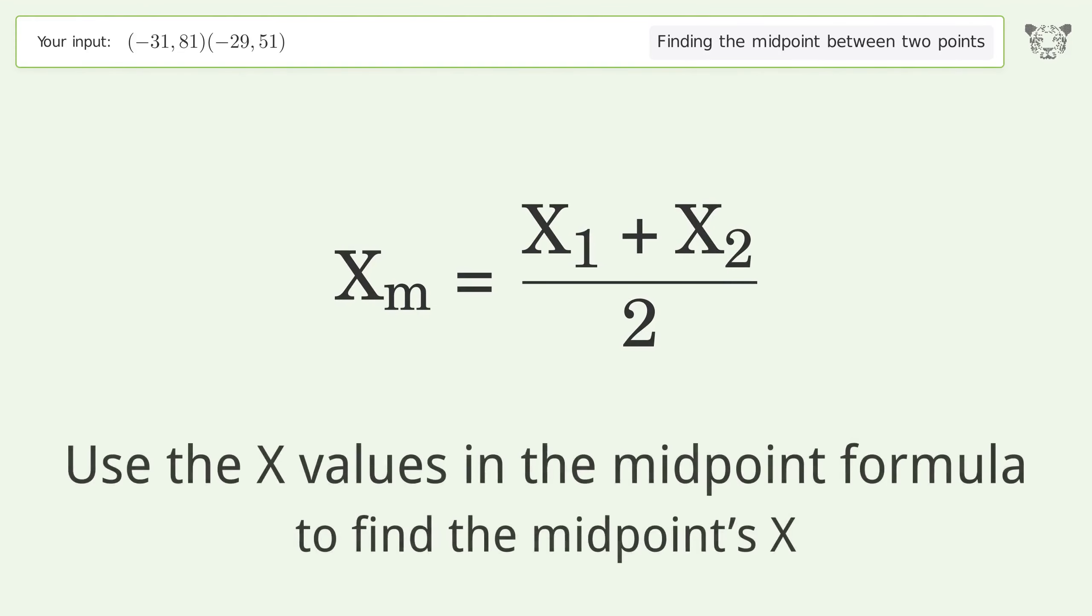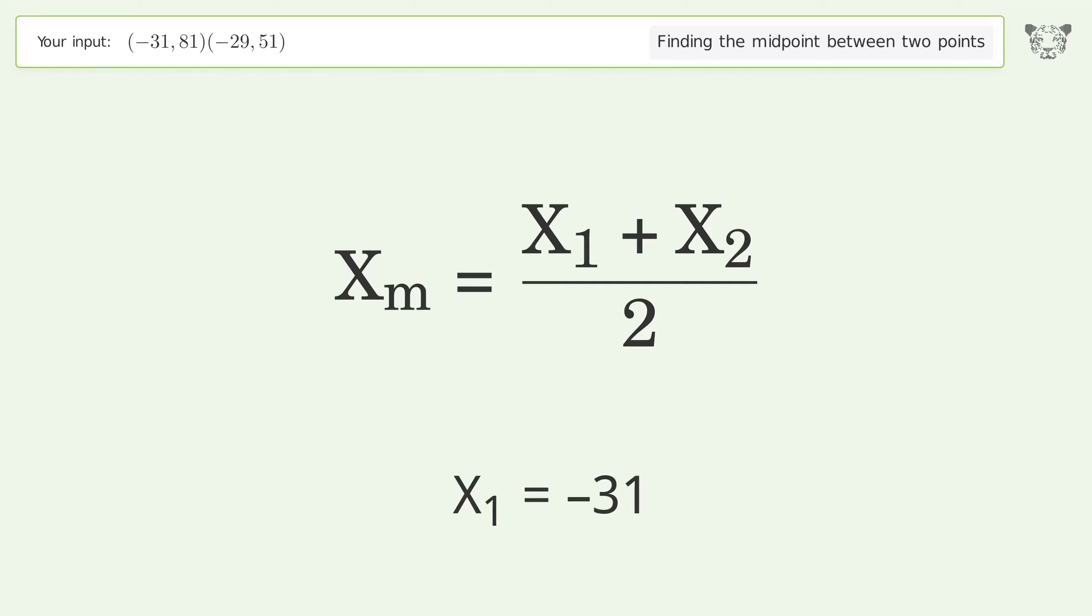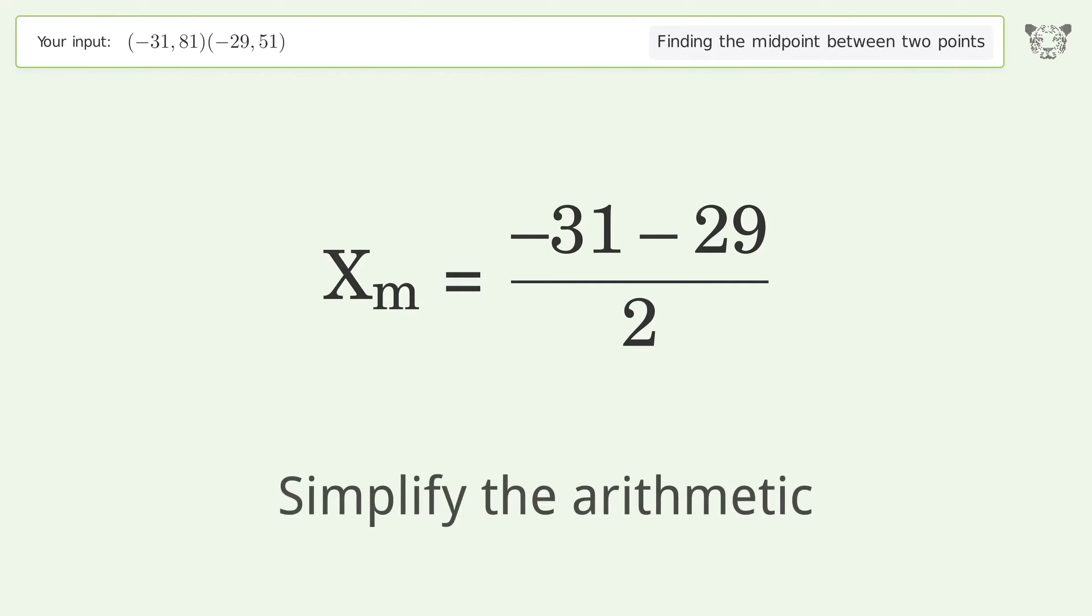Use the x values in the midpoint formula to find the midpoint x. x1 equals negative 31, x2 equals negative 29. Simplify the arithmetic.